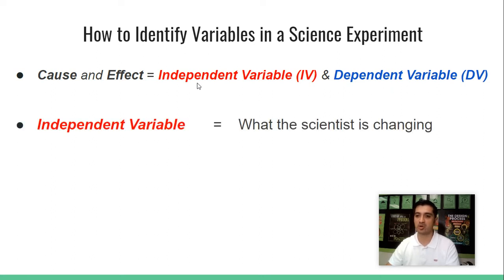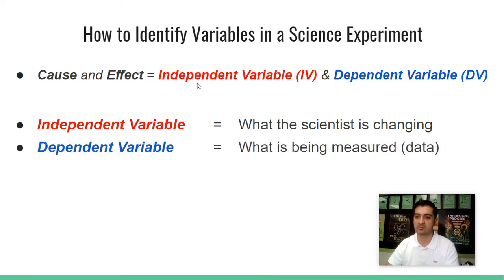So the independent variable is what a scientist changes in an experiment, and the dependent variable is what we measure. So let's look at an example so we can clarify it.